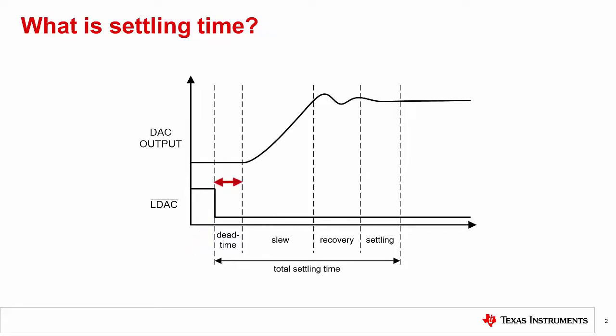Unlike an amplifier, there is a digital delay from the time the target output code is programmed to the device and when the output starts to transition. This is the time the internal logic of the DAC requires to latch the switches, which we call dead time. On most DACs this time is on the order of tens of nanoseconds.